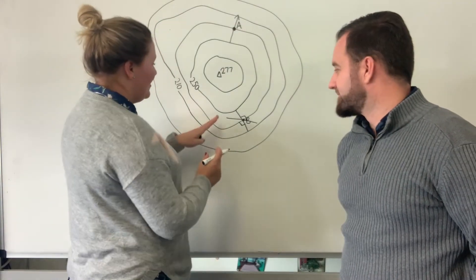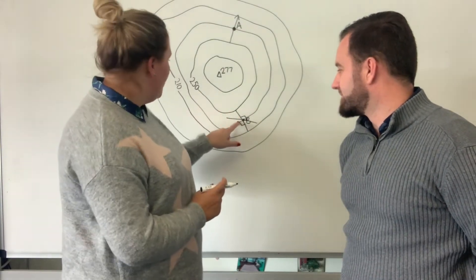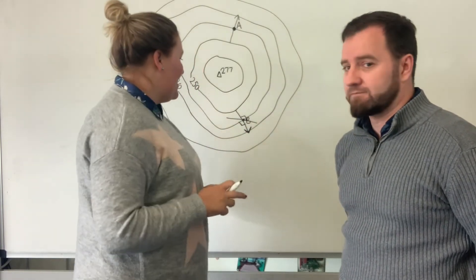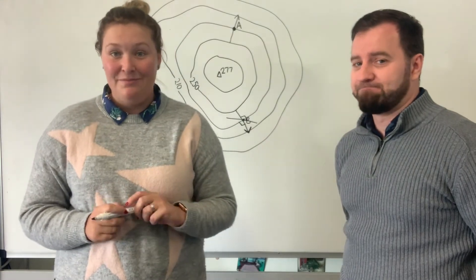We then work out as before which way is downhill. This one's 250, 230, 210. So we're going downhill in this direction. And we would say that that has a southeasterly aspect.